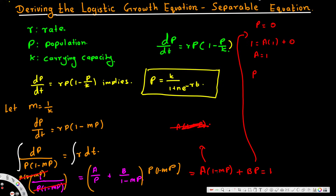Now let p equal to 1 over m and substitute into the equation. We get 1 equals A times 0 — because 1 minus m·(1/m) equals 0 — plus B times (1 over m). So B over m equals 1, therefore B is equal to m.